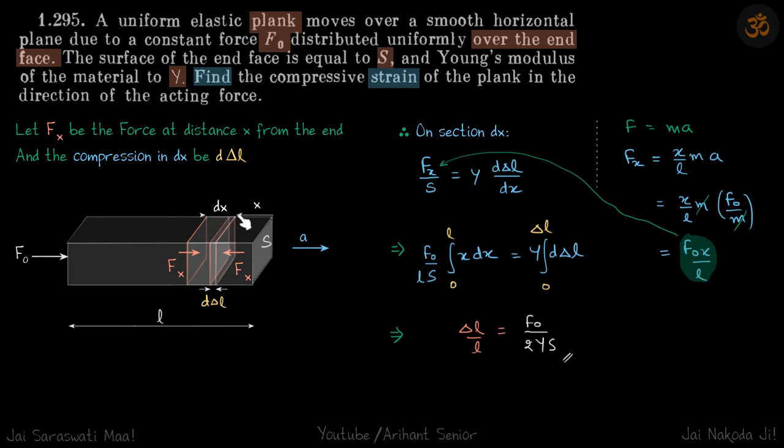So initially its length was dx, and then it's compressed by an amount d delta L. And let's say the force, or the tension in this rod—not tension, actually it will be compressive force—that at a distance x is fx. So again, we are taking a dx element at a distance x and within the dx element, the compression is d delta L. So now let fx be the force at a distance x from the end and the compression in dx be d delta L.